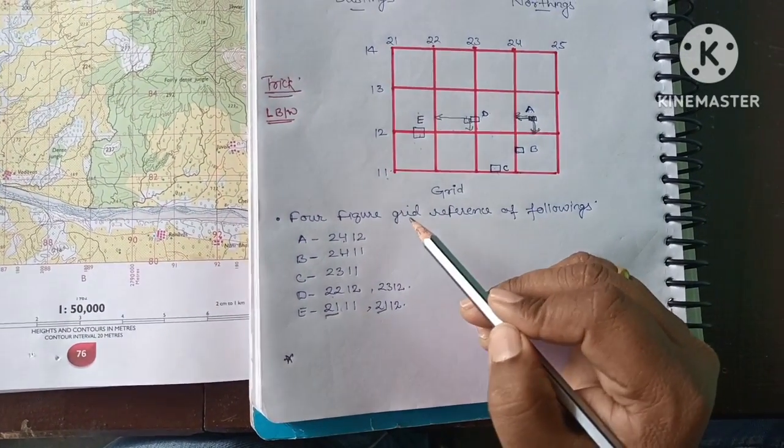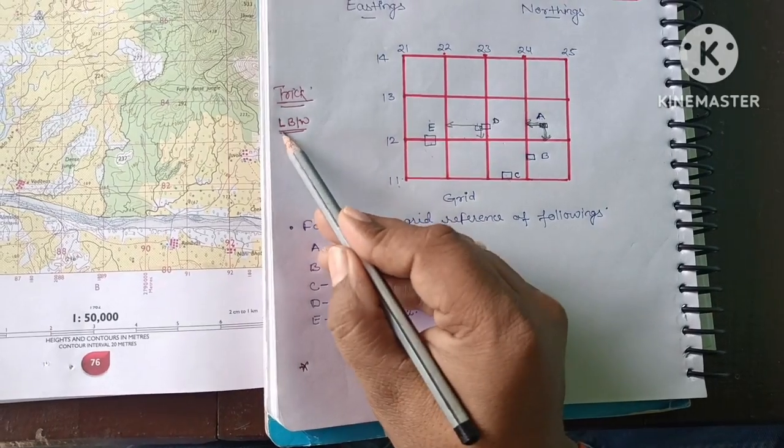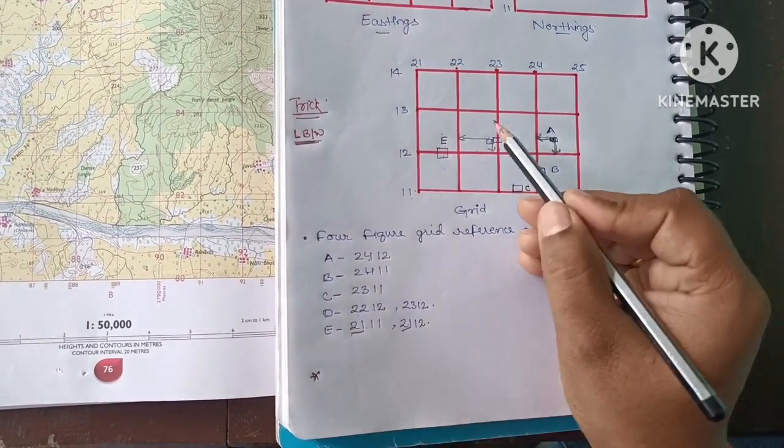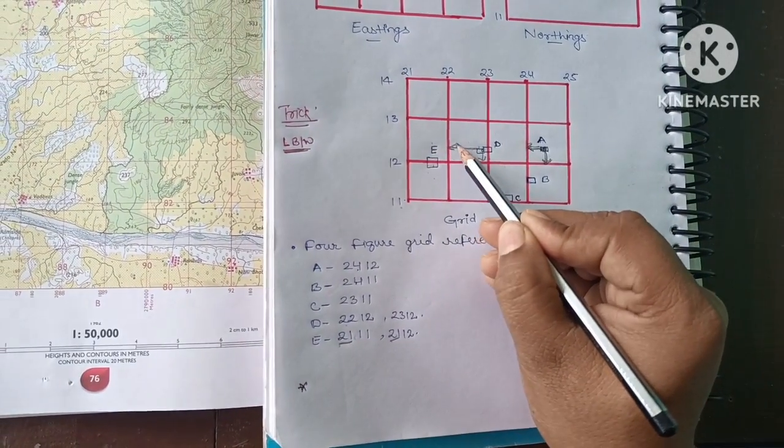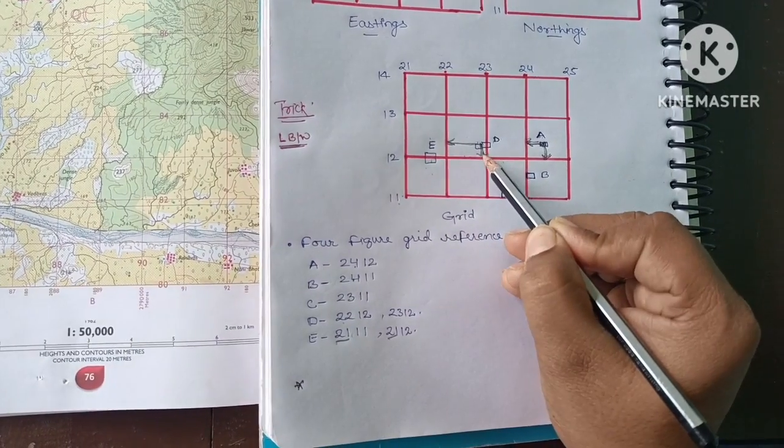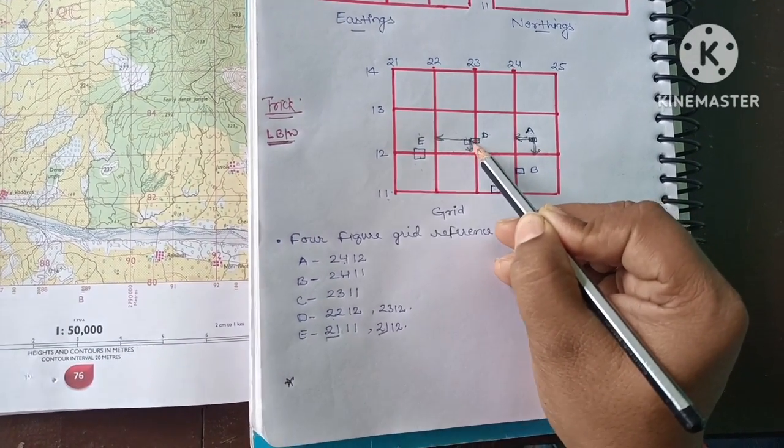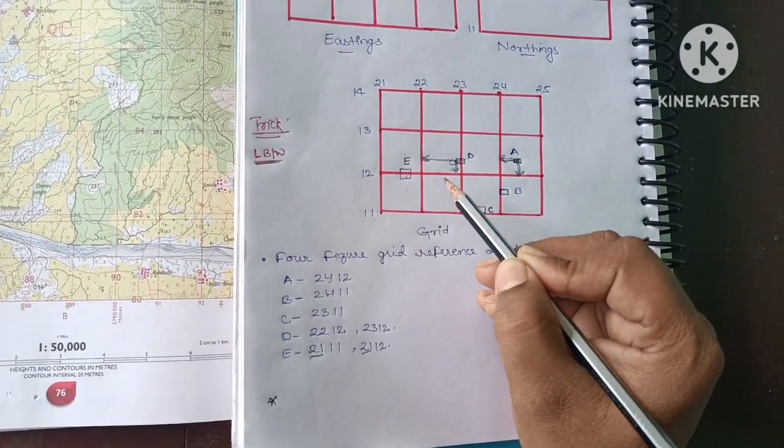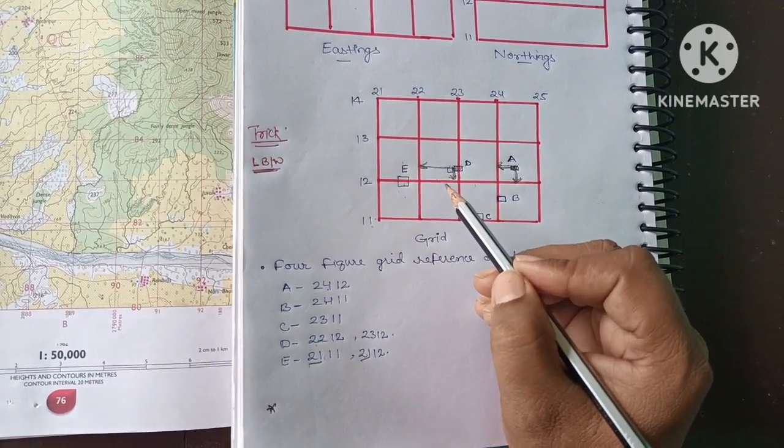So this is the shortest method formula LBW. First you have to measure left line, below line. So I hope you like this video, thank you and wait for the next one.